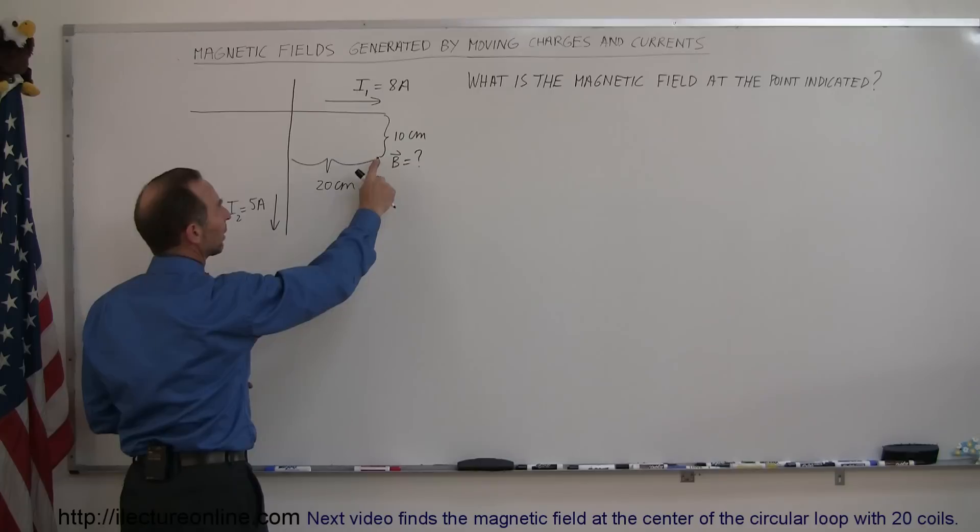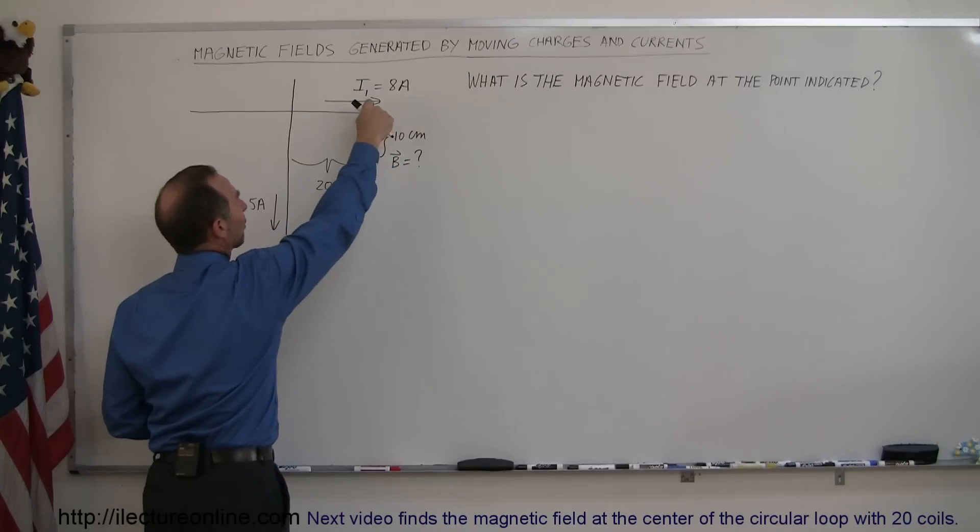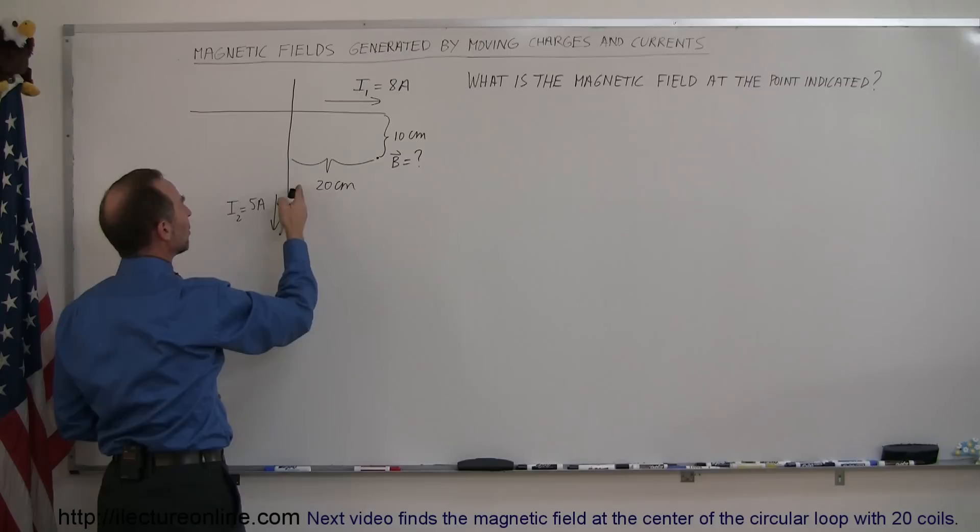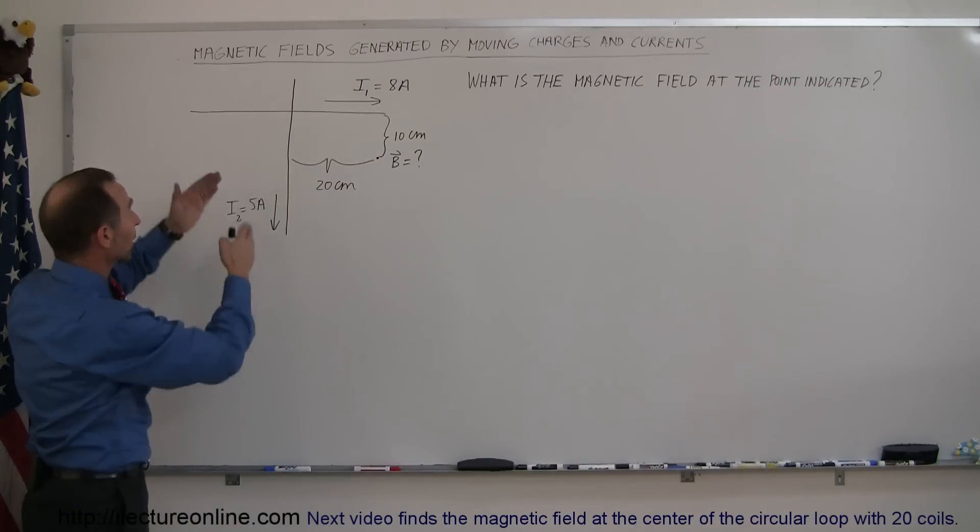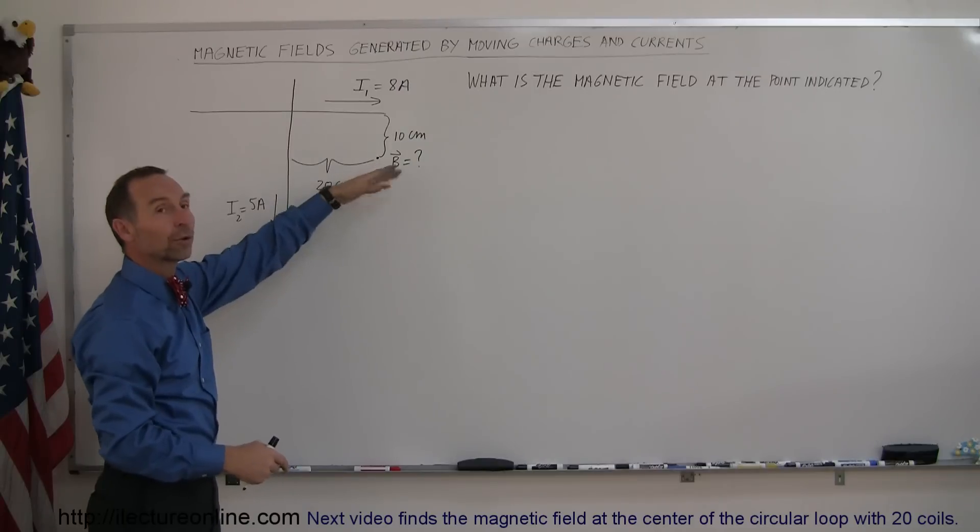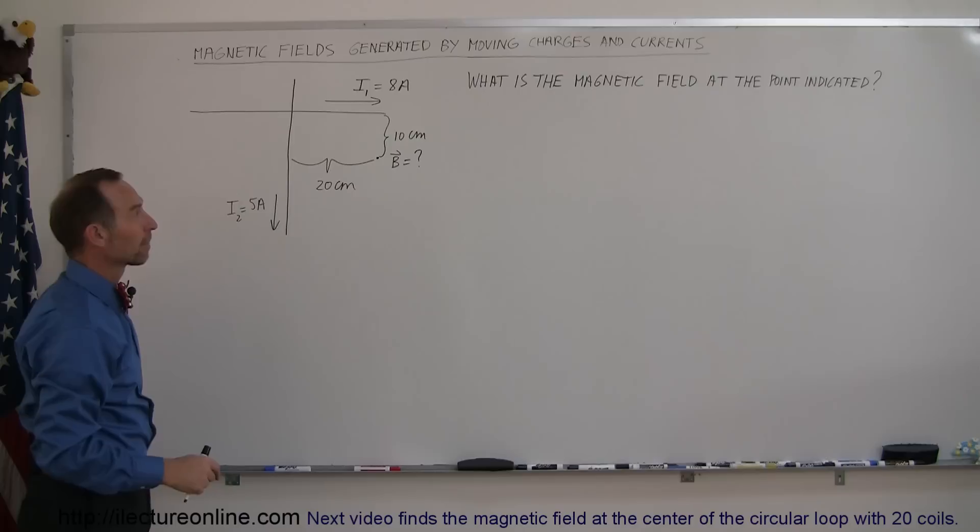And we're trying to find the magnetic field at this location, 10 centimeters away from current carrying wire 1 and 20 centimeters away from current carrying wire 2. Again, assuming that the wires are infinitely long relative to the position of this point to the two wires.